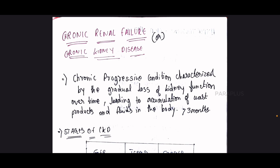CKD develops gradually over a few months — at least 3 months — making it a long-term condition. The kidney function is gradually reduced over time.